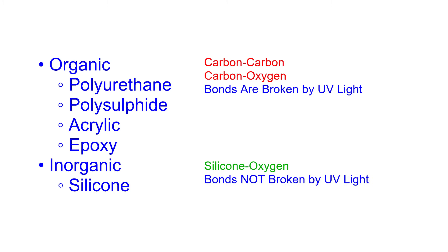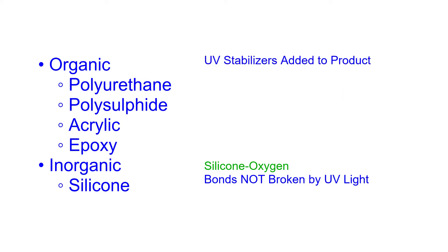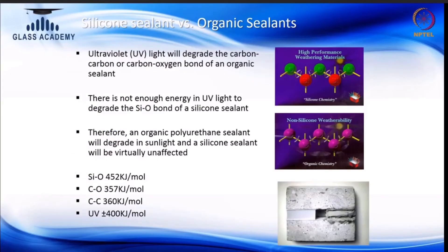If you talk about organic chemistries, their bond energies are lower than the UV light energy, so they can be degraded. They do stabilize them by using an external stabilizer, which has got a limited life. But if you look at silicone, the silicone polymer has got an inherently stable backbone, giving it inherent stability against UV exposure in sunlight. This is one of the key differentiators.